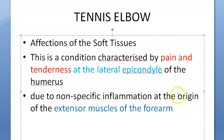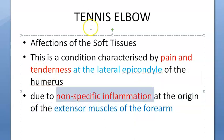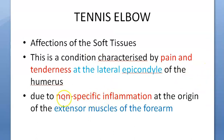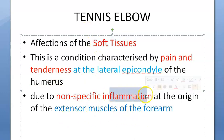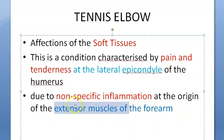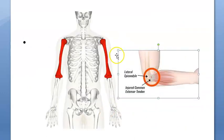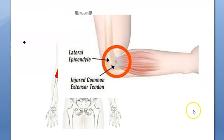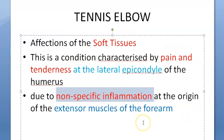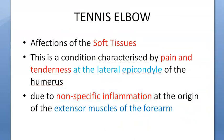This occurs because of non-specific inflammation at the origin of the extensor muscles of the forearm. These muscles originate at the lateral epicondyle, and the inflammation there is non-specific — meaning you cannot pinpoint one specific cause for it.